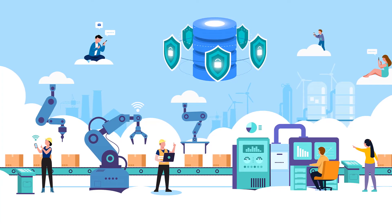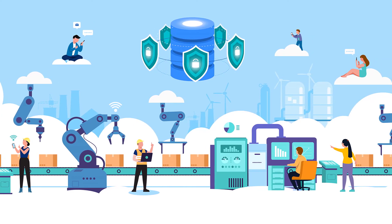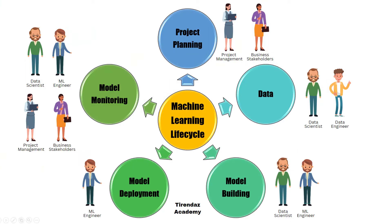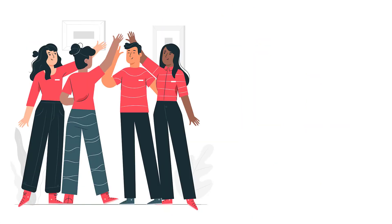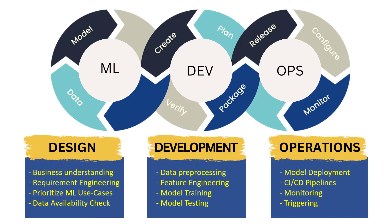Projects that stay in notebooks are dead projects. After building machine learning models, putting them into production is one of the important stages — this step is called MLOps. Data scientists theoretically build models, then machine learning engineers take those models, train them, and put them into production. You can use tools like Amazon SageMaker, Google Vertex, and MLflow for MLOps. Machine learning engineers are also responsible for monitoring models, and if a model is not performing well, they build a new version. Therefore, machine learning consists of an endless cycle.